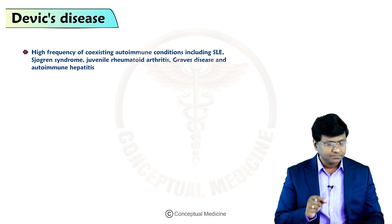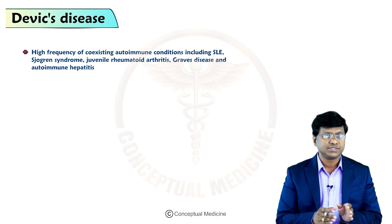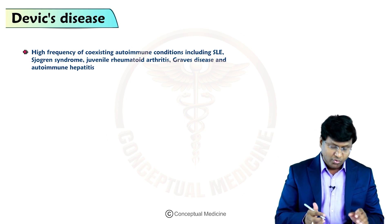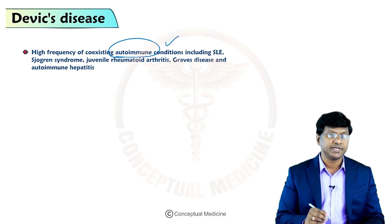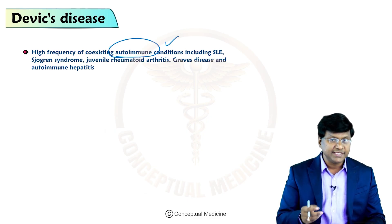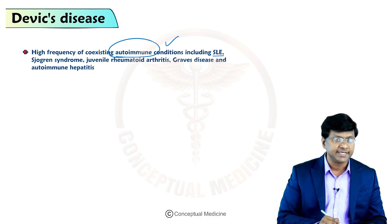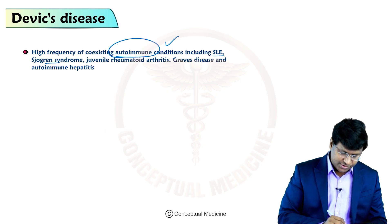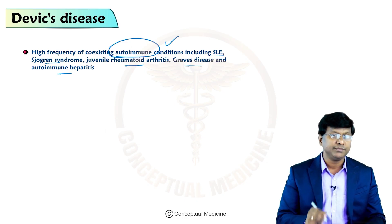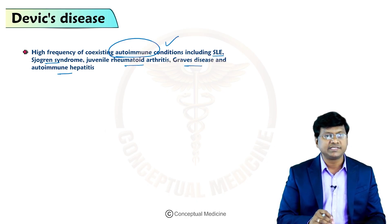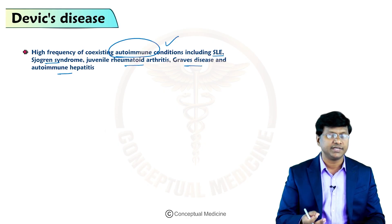Devic's disease is associated with certain coexisting autoimmune conditions. These include systemic lupus erythematosus, Sjögren's syndrome, juvenile rheumatoid arthritis, Graves' disease, and autoimmune hepatitis.